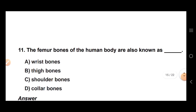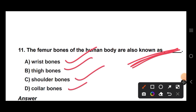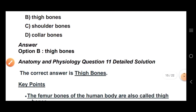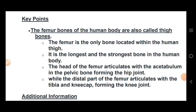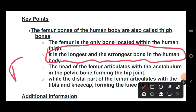Question 10: the femur bone of the human body. The femur is also known as the thigh bone. It is the longest and the strongest bone in the human body. The femur bone is located in the upper leg region.